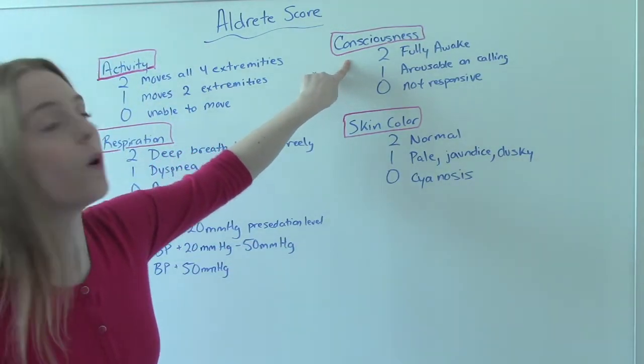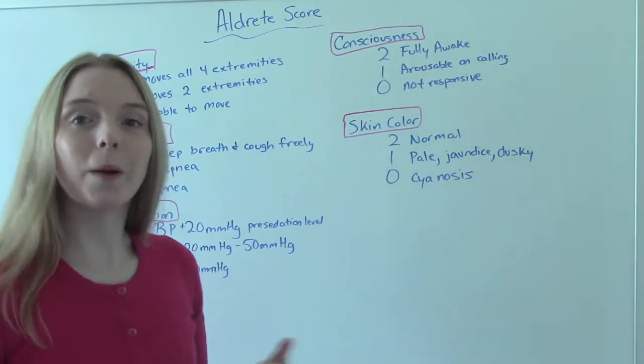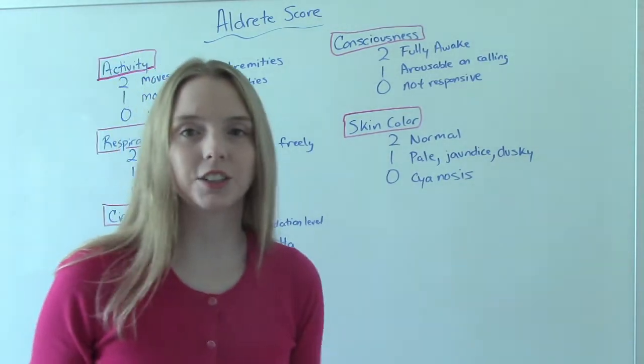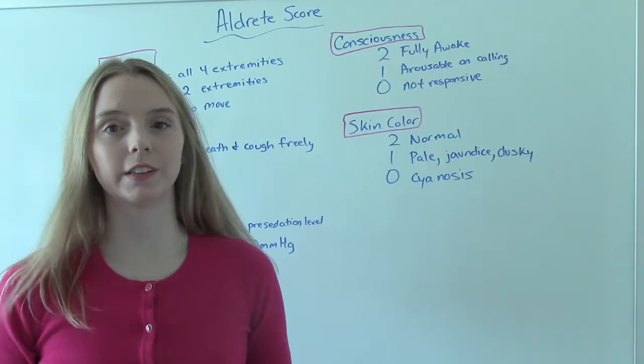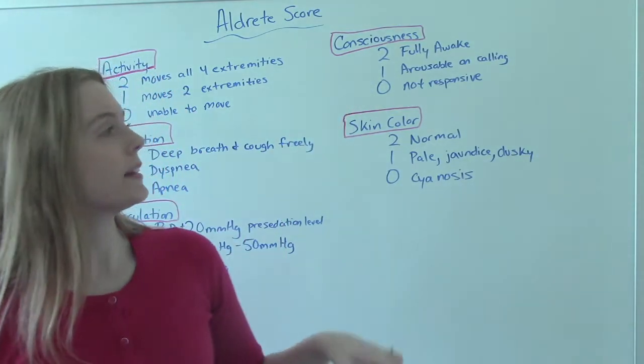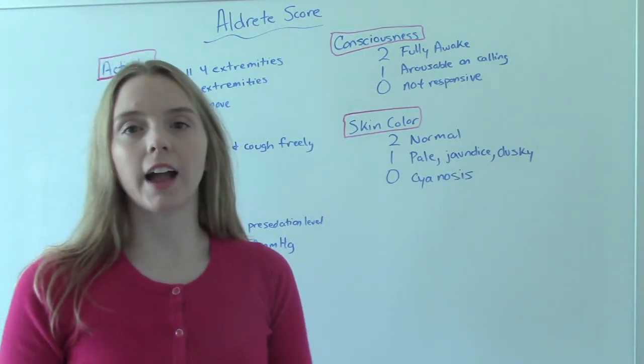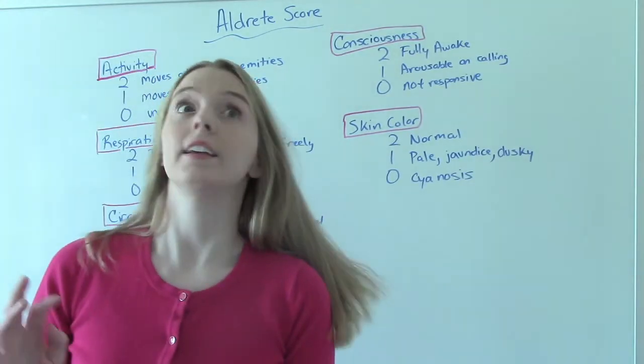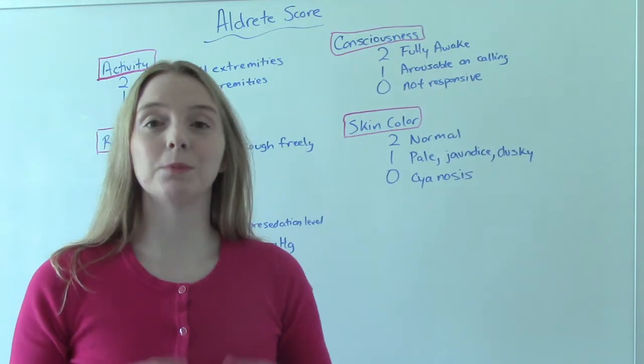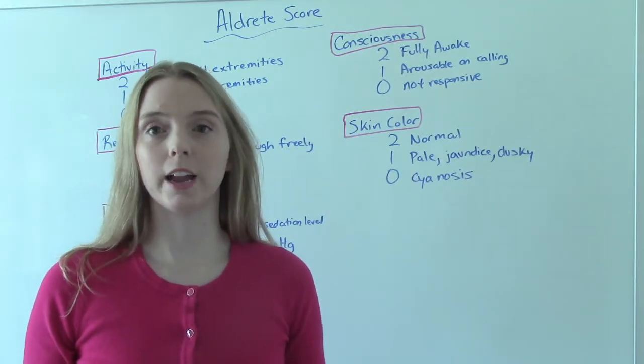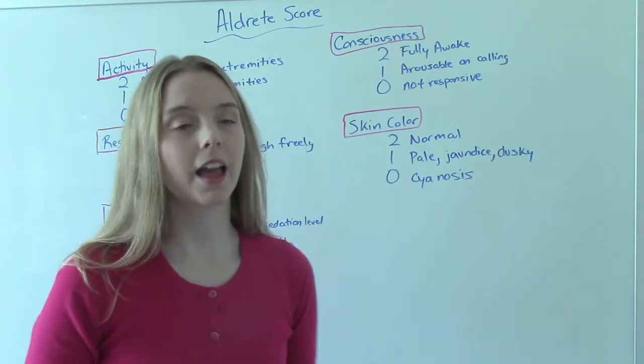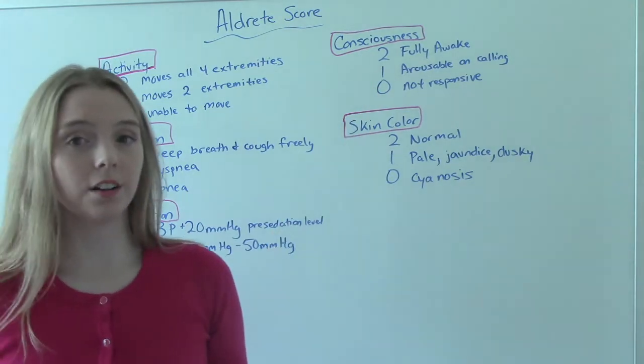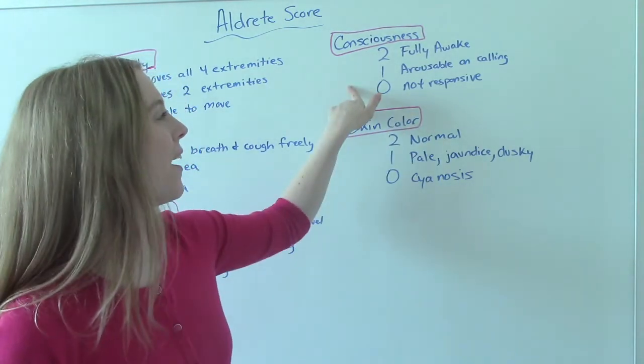The consciousness. So fully awake. Awake. They're talking to you. They're asking you questions. That's really good, so they get a 2 for that. 1 is arousable on calling. So they kind of drift off when you're talking to them. And you go, Mr. Johnson. And then they go, oh, yes. So without touching them, just talking to them, calling them by name, they can wake up. They get a 1. And then they don't respond at all. That's also not good. That's a 0.